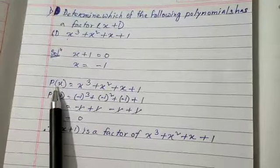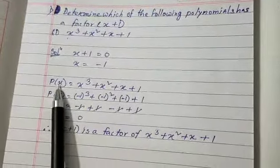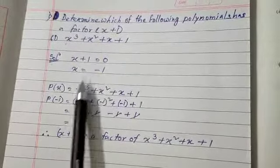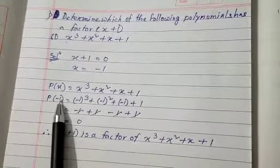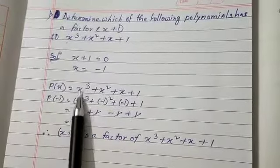Since x = -1, we substitute -1 in place of x throughout the polynomial. So we write: P(-1) = (-1)³ + (-1)² + (-1) + 1.